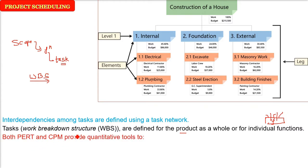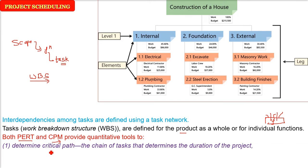Both PERT and CPM provide quantitative tools. PERT is the Project Evaluation and Review Technique; CPM is the Critical Path Method. These two are essentially project management and scheduling methods. We determine the critical path, which is the longest path with critical activities — the longest path possible from start to finish.